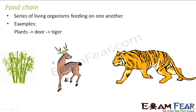Plants are the producers here because they are producing food. Now these animals — deer — they feed on plants. And these deer are then fed upon by animals like a tiger. So this is forming a food chain. That means plants which are eaten by a deer, and deer in turn is eaten by a tiger. So this is a series of living organisms feeding on one another, and this is called a food chain.